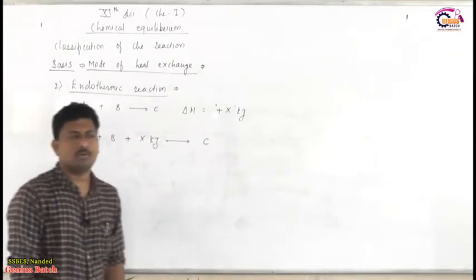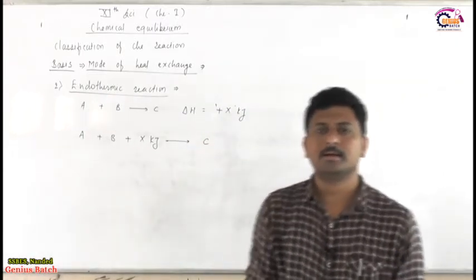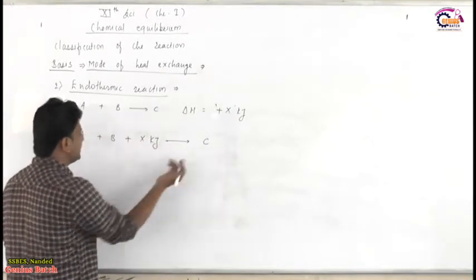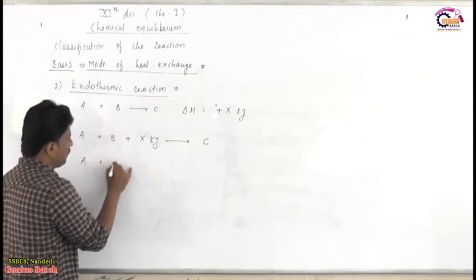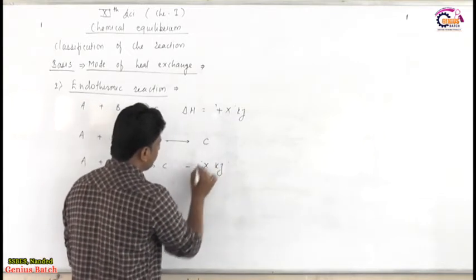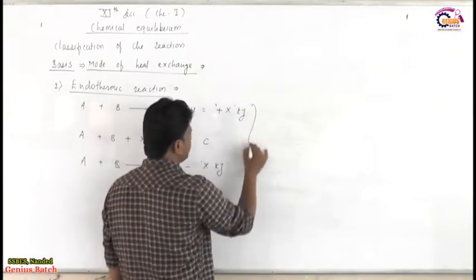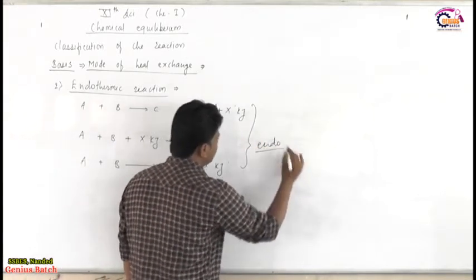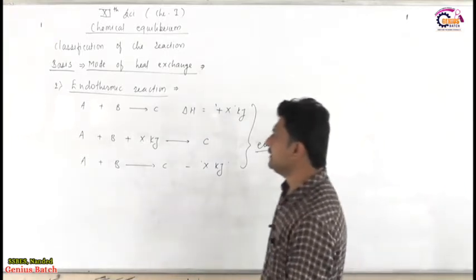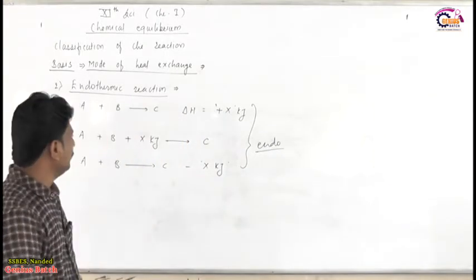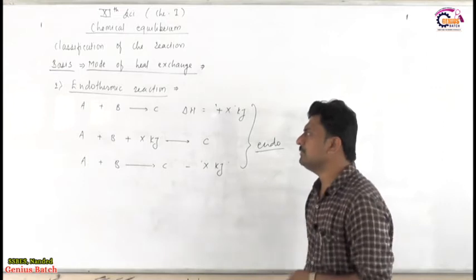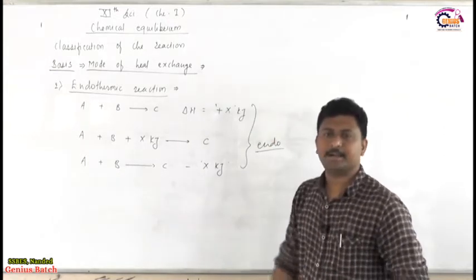The equation can be written as A plus B plus x kJ of heat, and then it will convert to product C. This is one mode of representation for an endothermic reaction. Alternatively, if we take x to the right-hand side, it becomes negative: A plus B converts to product C with minus x kJ. All three reactions are correct representations of endothermic reactions — by all three ways, we say that x kJ of heat is absorbed by the reaction mixture while converting reactants A and B into product C.